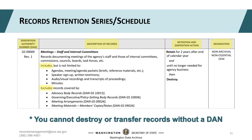This is a screenshot of one record series — meetings, staff, and internal committees — that you'll find in CORE and the state general schedule. Retention schedules are lists of record types, much like any list you create or use in your work. Each type of record has a Disposition Authority Number, or DAN. DANs are unique identifiers that authorize the retention and disposition of a record. Like most unique alphanumeric identifiers, DANs don't make much sense on their own, but in context they distinguish one series from another. DANs are important to include in inventories, box content lists, or disposition logs.